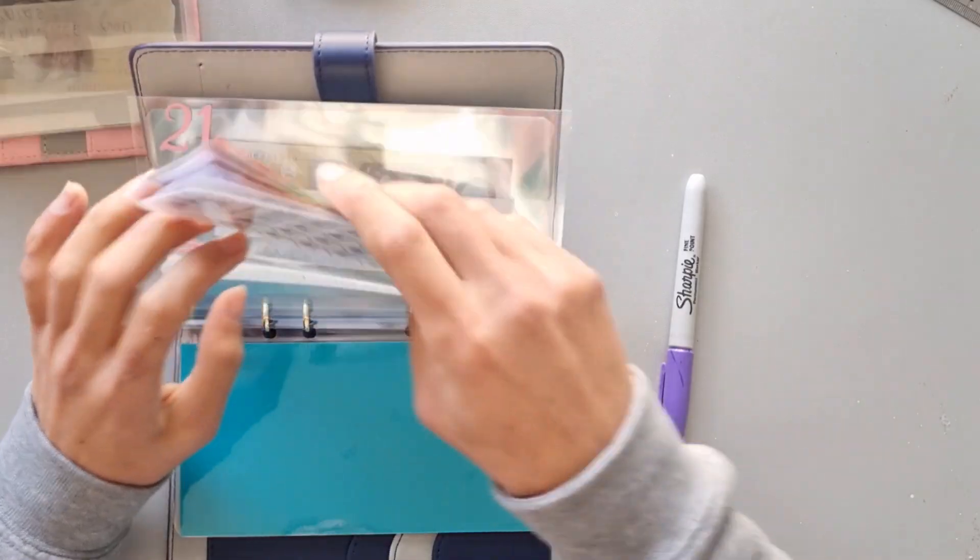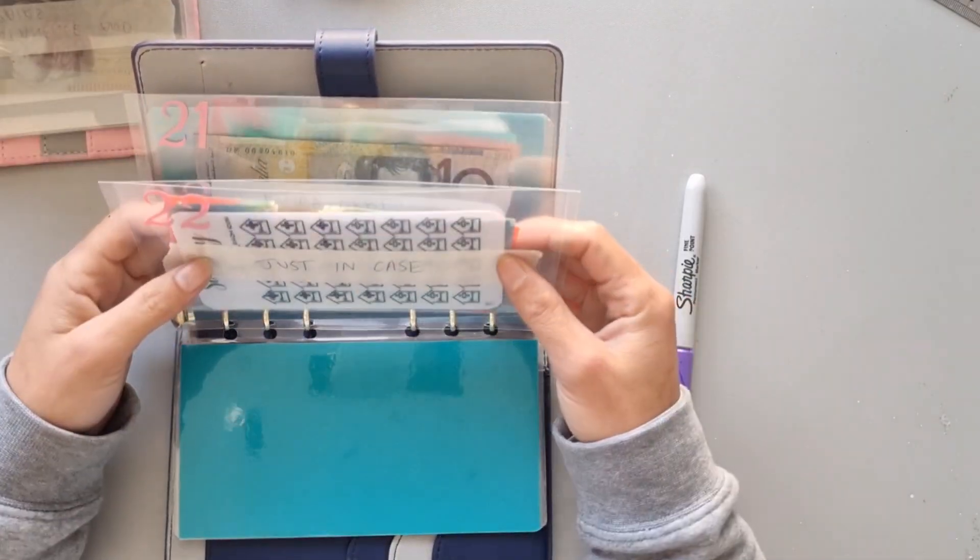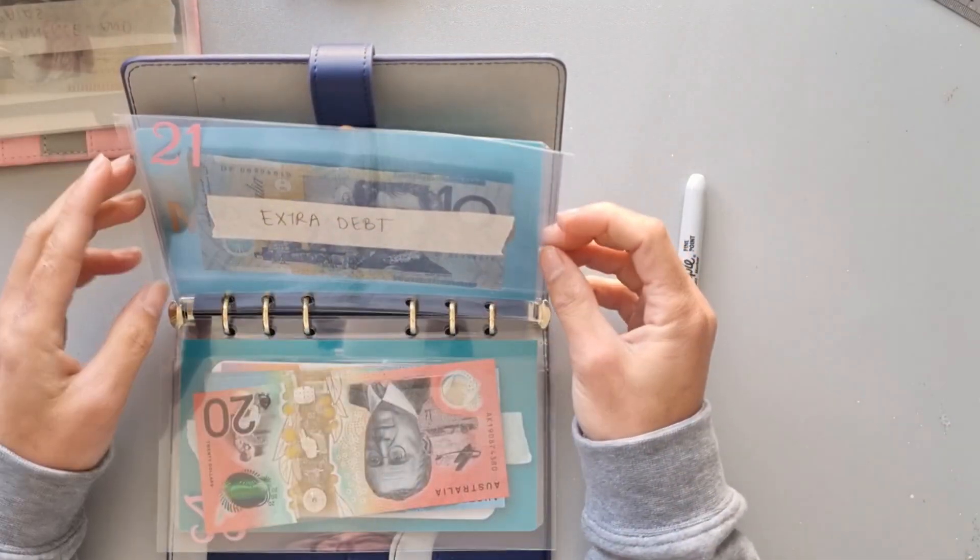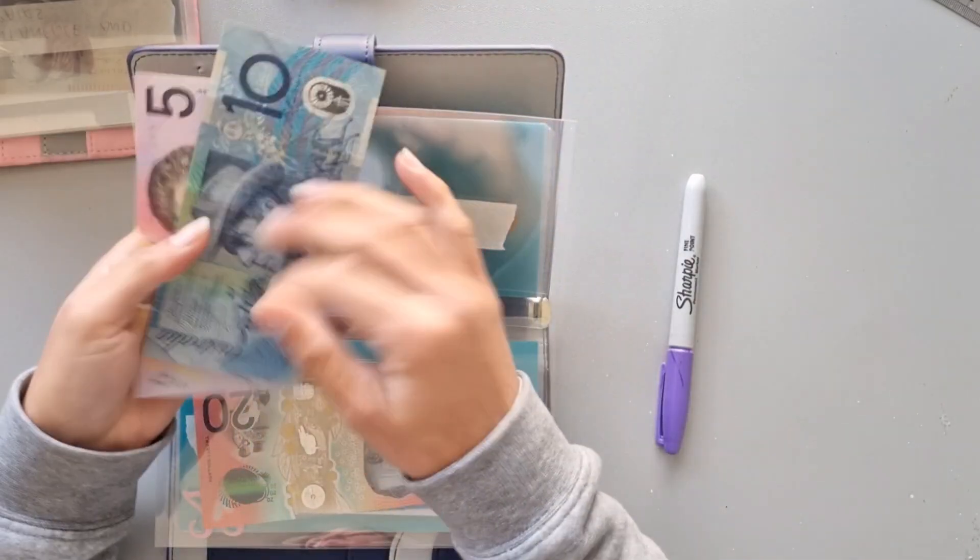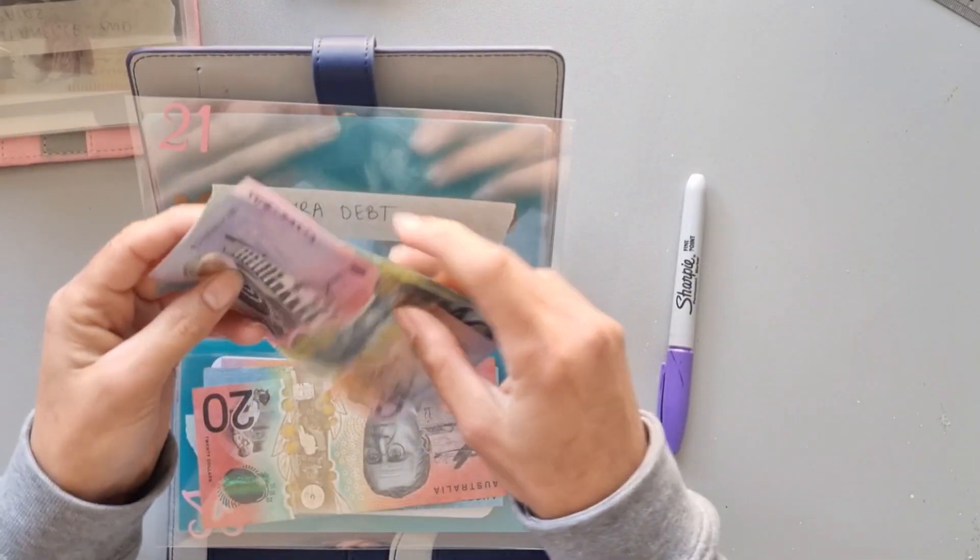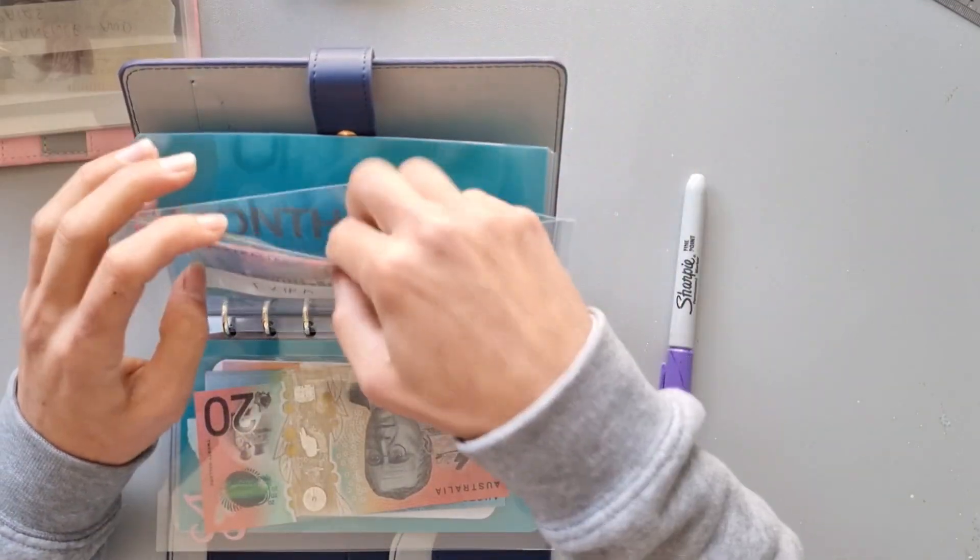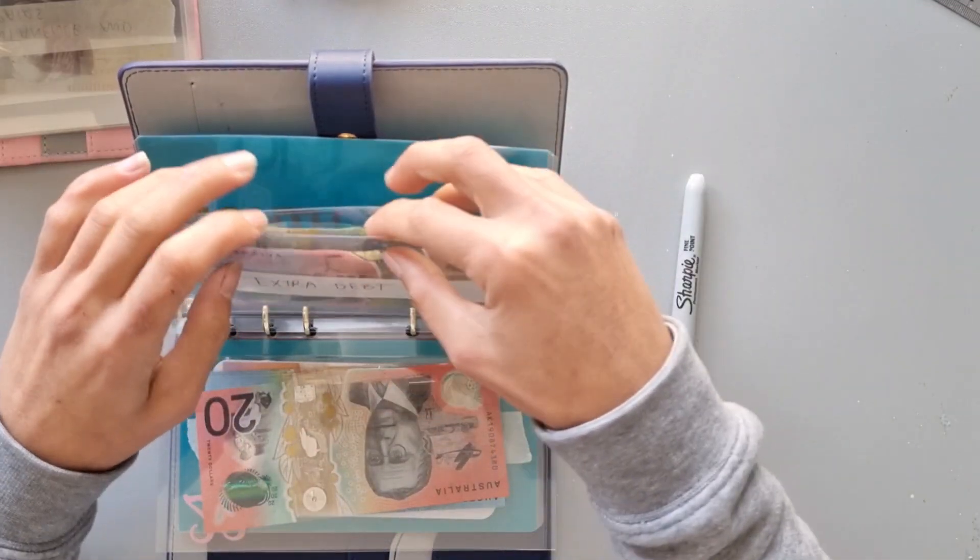And I think we'll add 5 in Extra Debt. So now we've got 10, 15. And that is everything we are reallocating.